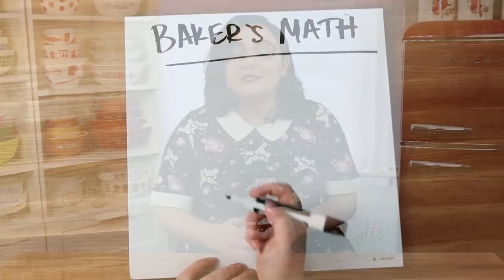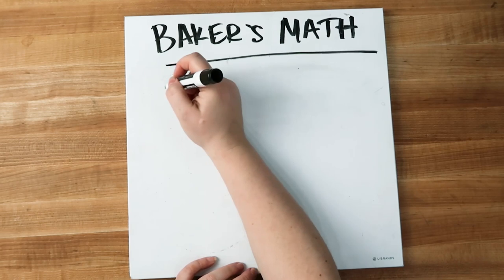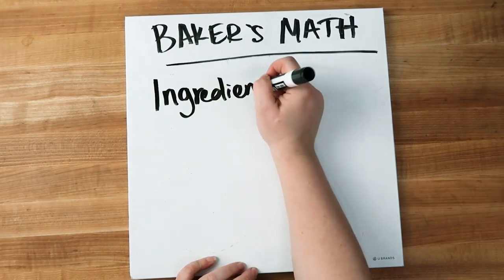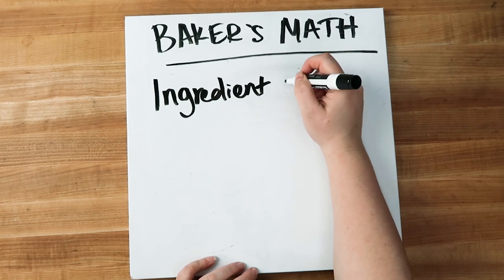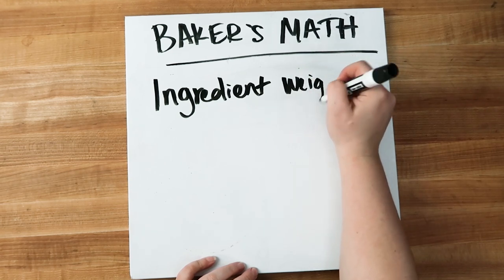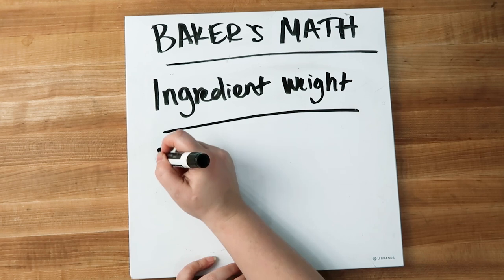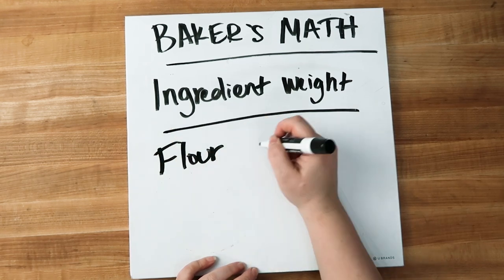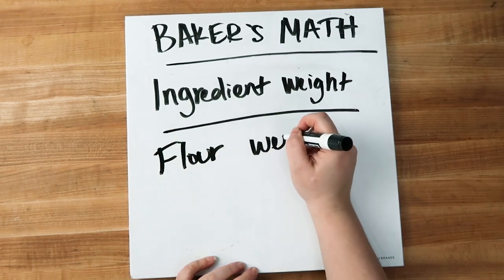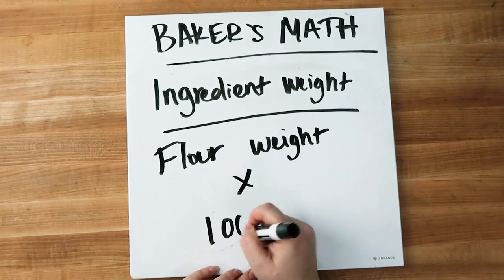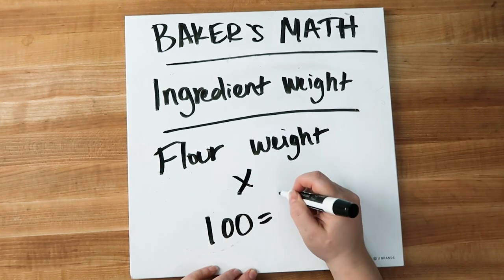We're talking about weights here — it's really important to calculate these from weight measurements rather than volume measurements. After you know the weight of the flour, each ingredient can be calculated in relation to that weight. You take the weight of the ingredient you are calculating, divide it by the amount of flour, and then multiply that number by 100, and you get your baker's percentage.